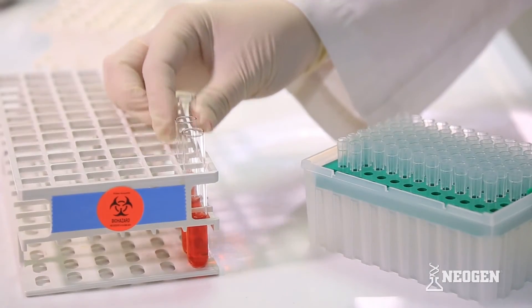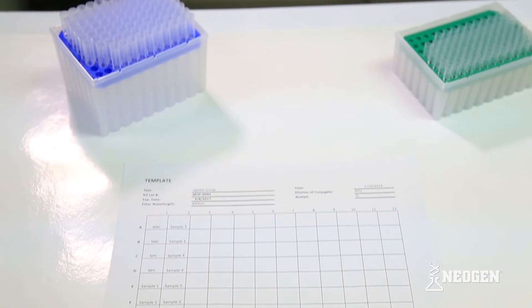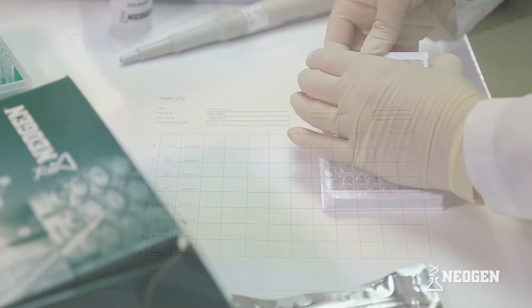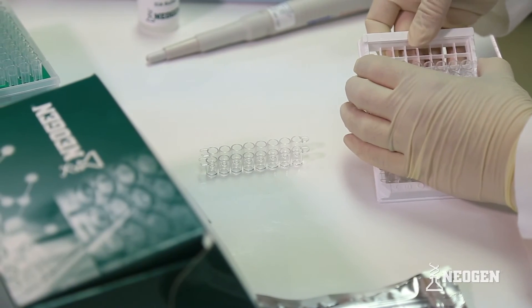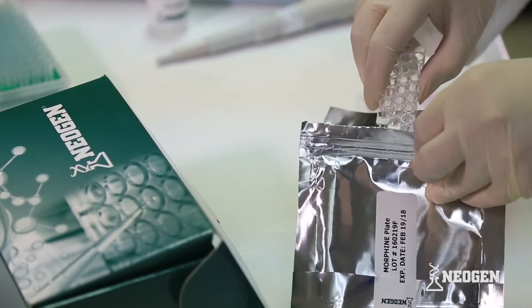Remember, it is recommended that controls and samples are assayed in duplicate. You may find it helpful to create a plate map to track which samples are in each well. If you are only running a partial plate, gently pop out any unneeded strip of wells and place them back in the bag with the desiccant bag so that they may be used at a later time.